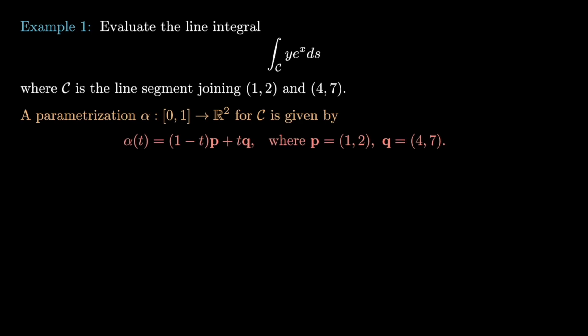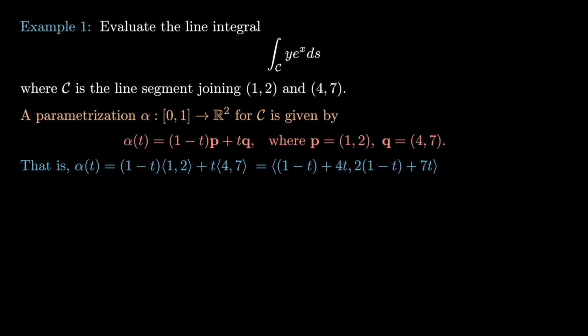An elementary argument shows that such a curve is given by alpha(t) = (1−t) times the first point plus t times the second point. Writing this out explicitly using angled brackets, alpha(t) = (1−t)·⟨1,2⟩ + t·⟨4,7⟩, which simplifies to ⟨1+3t, 2+5t⟩. This gives us our parameterization — it's a line segment, so we expect it to be linear in each component.